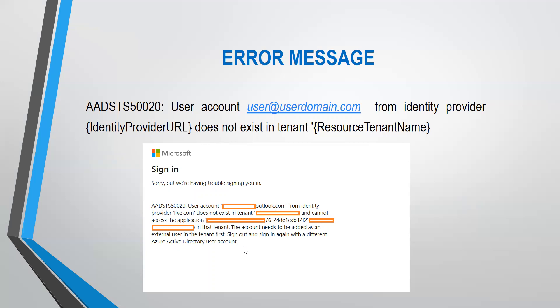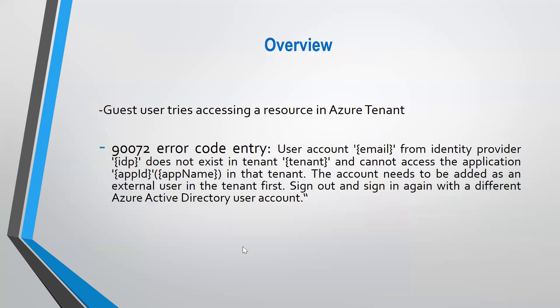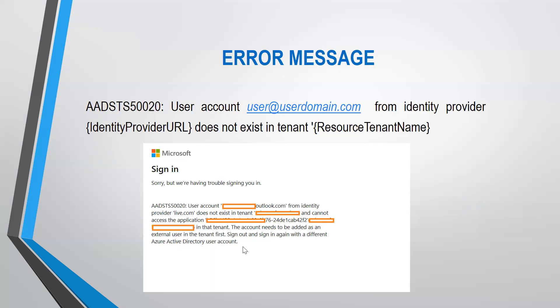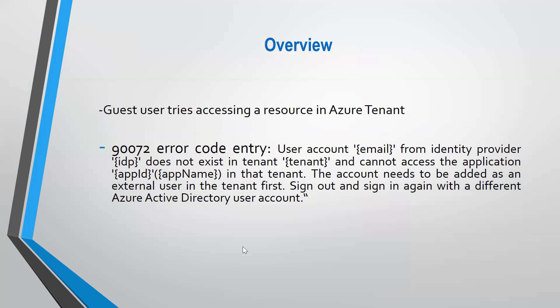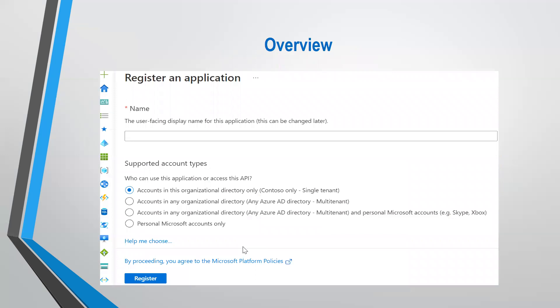If you have access to this user's own tenant where the user is hosted and you sign in there with a user admin or global admin credential, you will be able to see the 90072 error code entry, which indicates a sign-in failure for this user that corresponds uniquely to the 50020 error message we see on our screen.